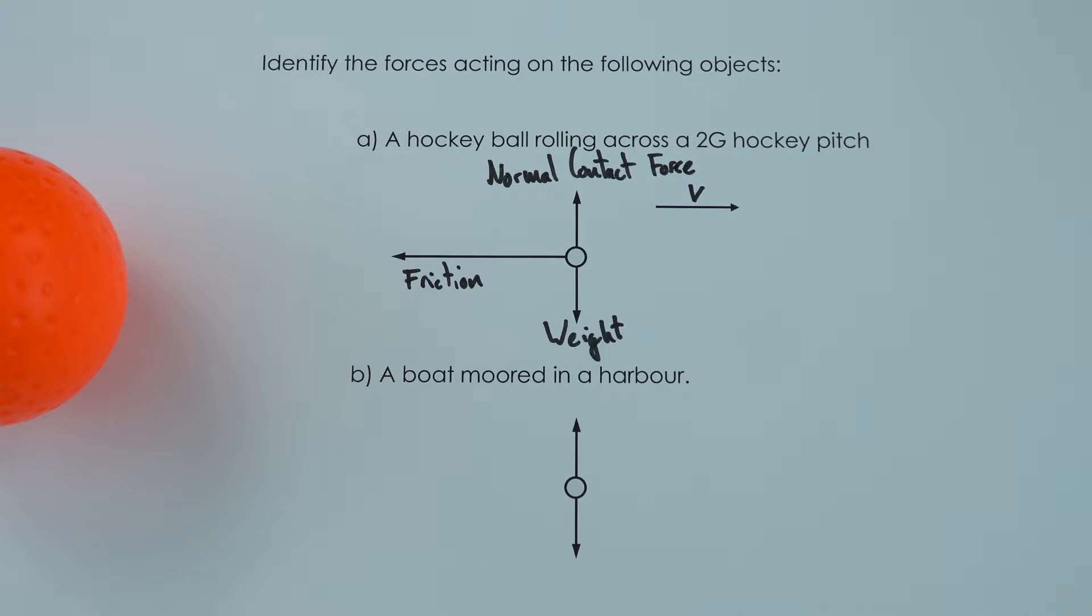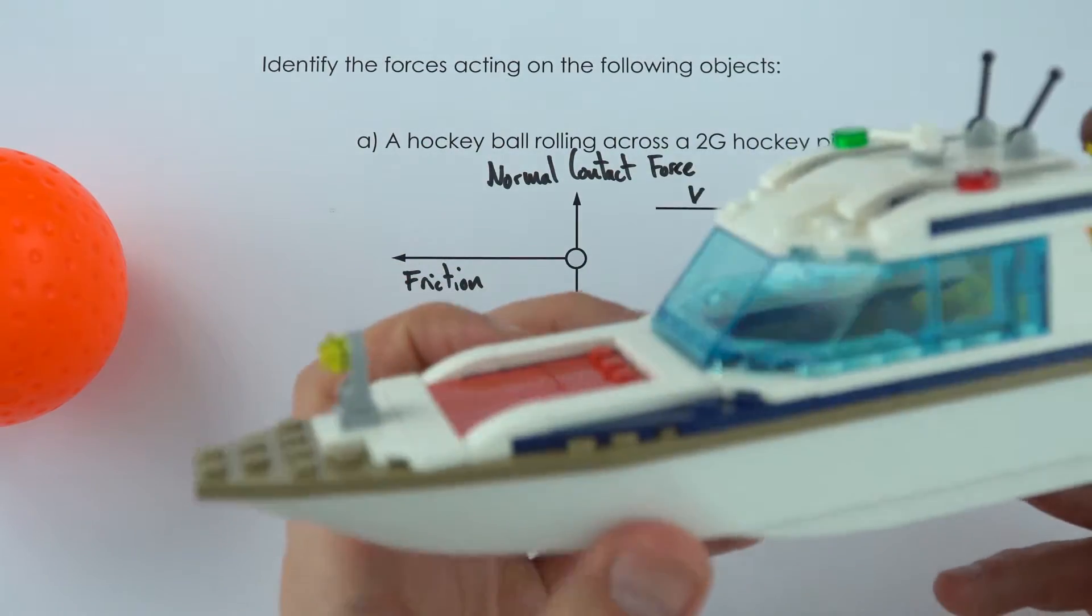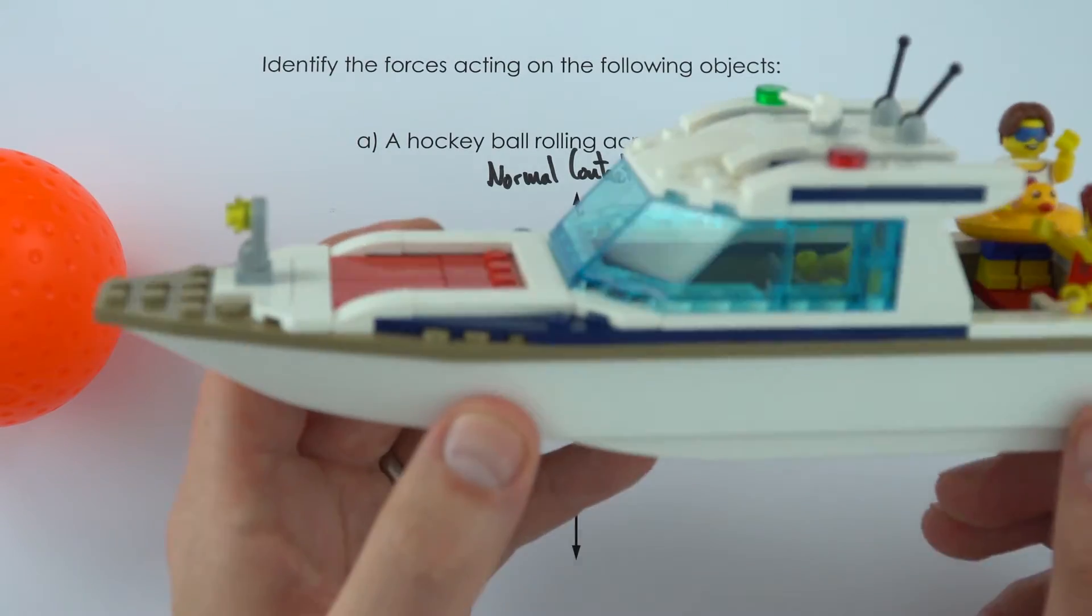The other example is if we have a boat which is moored in a harbour. So if it's moored in the harbour it means it's not actually travelling along, it's just pretty much sitting still on top of that water.